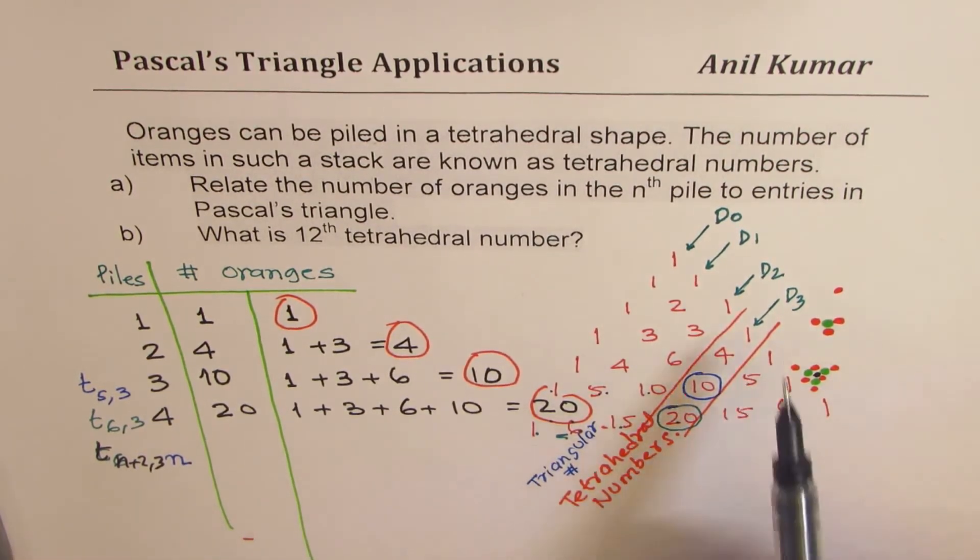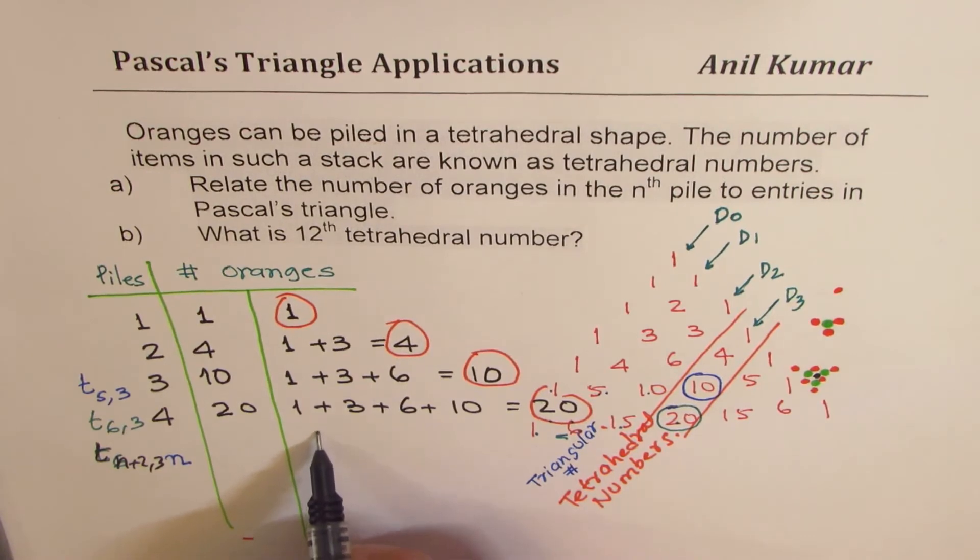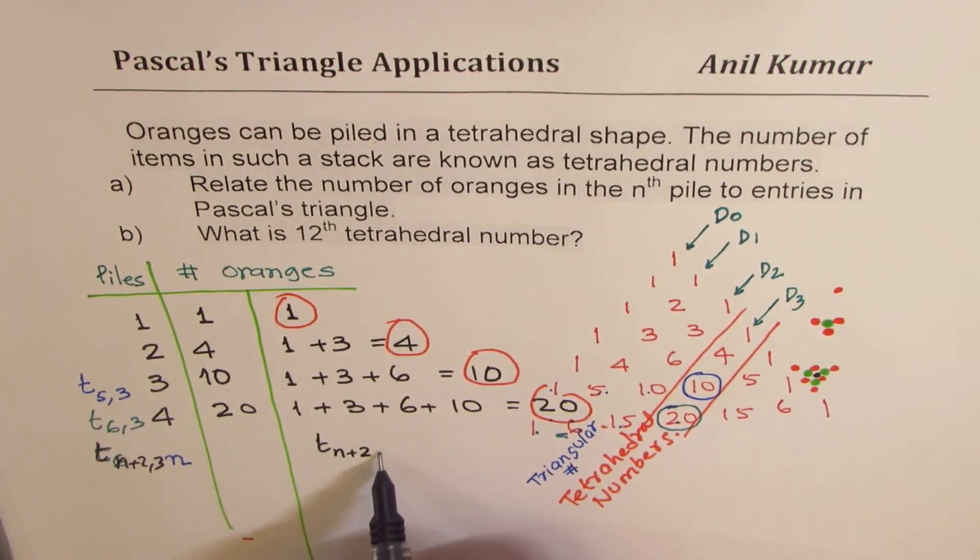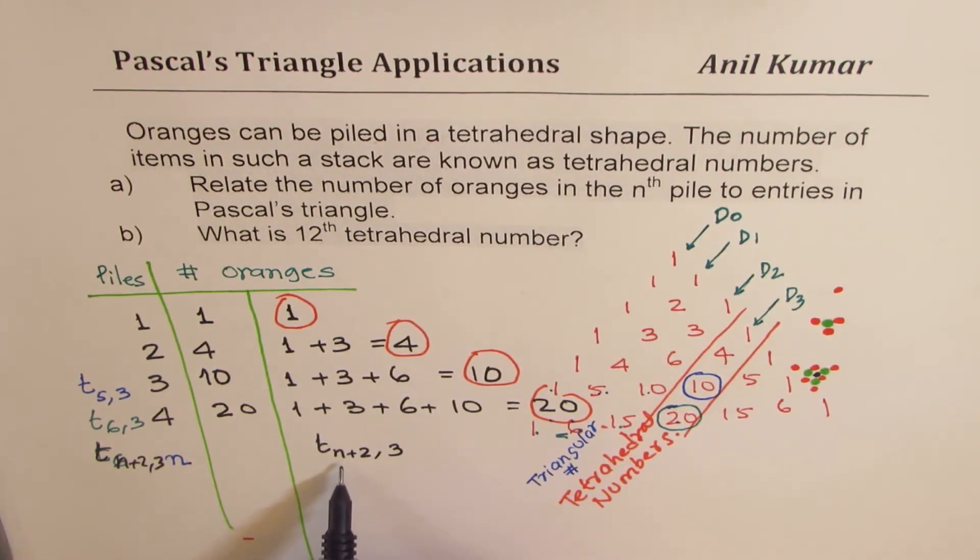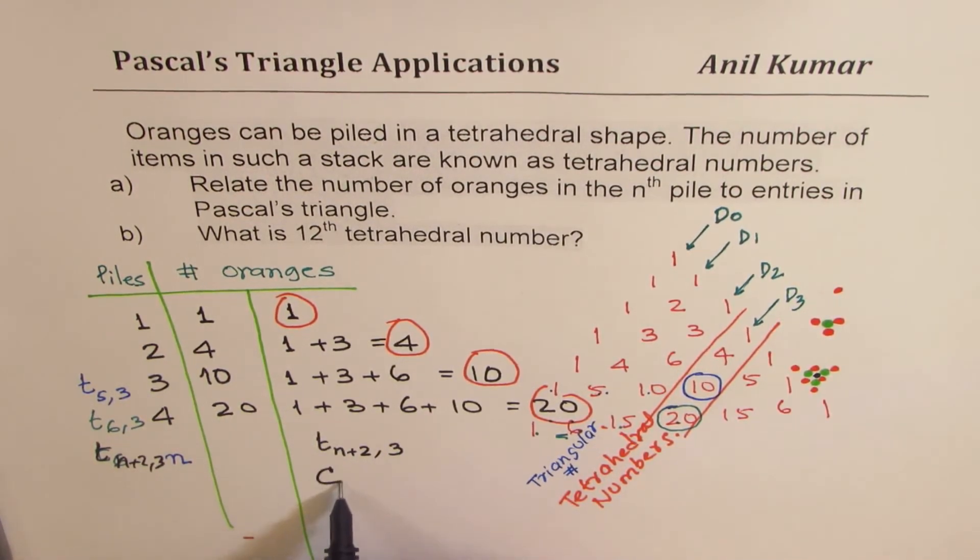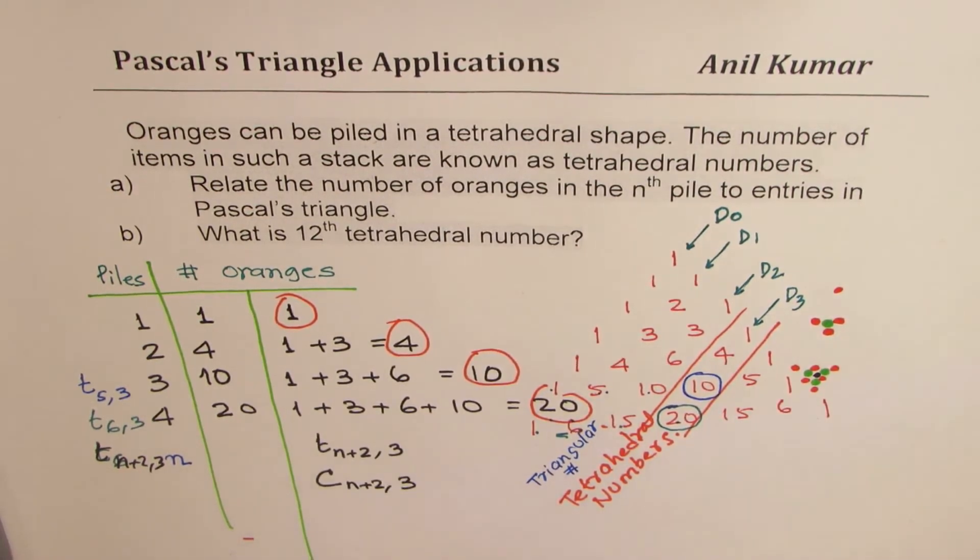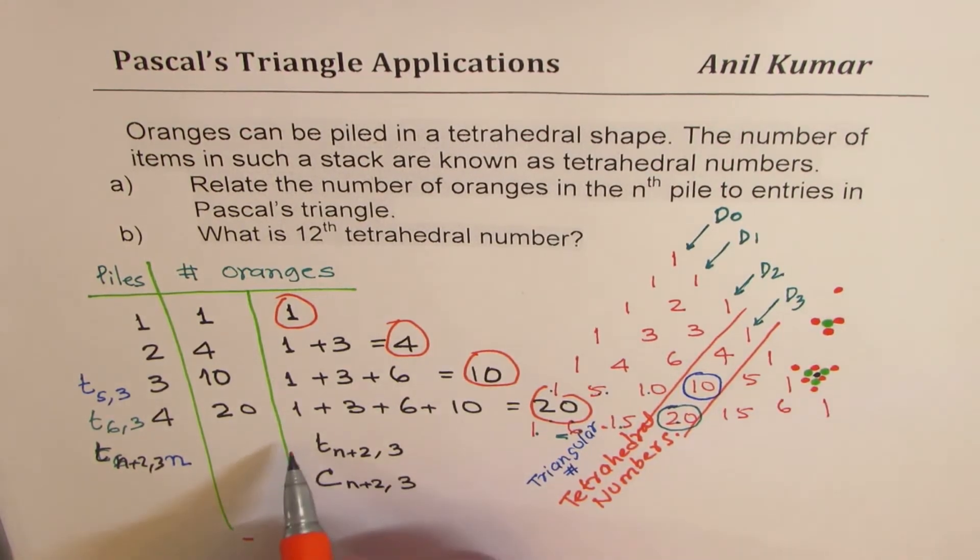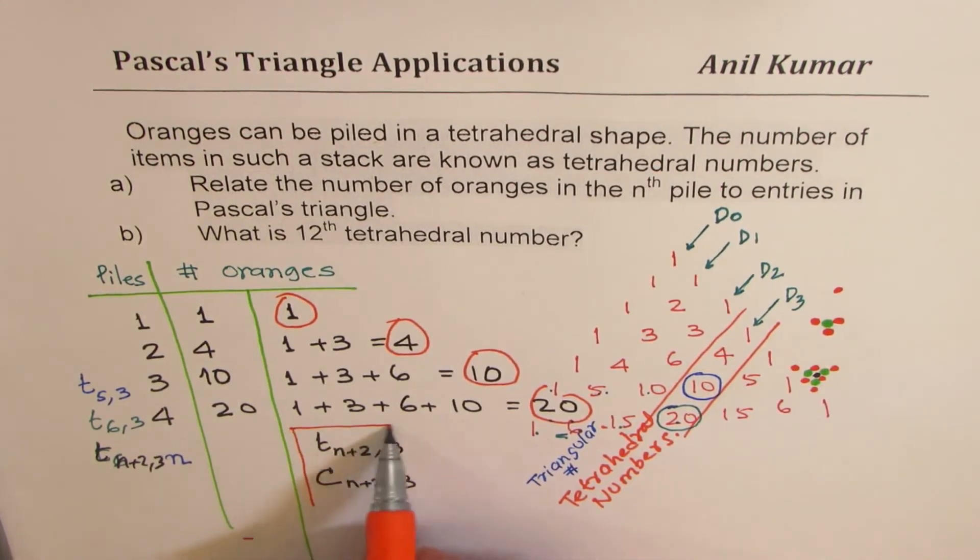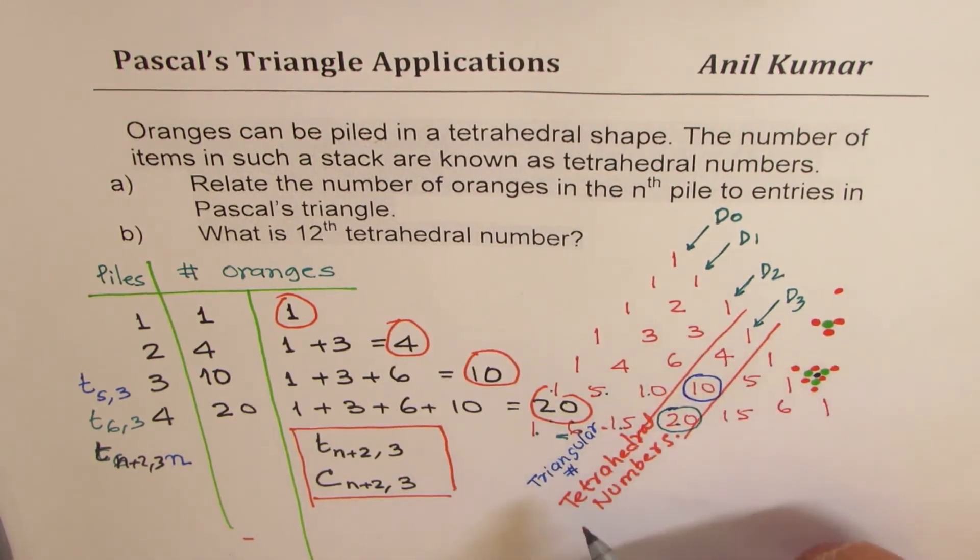So tetrahedral numbers are on diagonal three. And they can be given as T n plus two, three, where n is the number of piles. So if you have to calculate the value without making the triangle, we can use the combination formula. C n plus two, three. So that gives you the answer. So I hope that makes some sense.